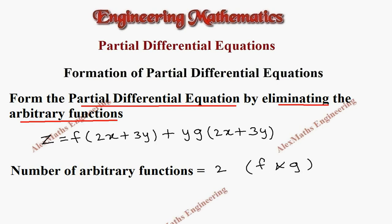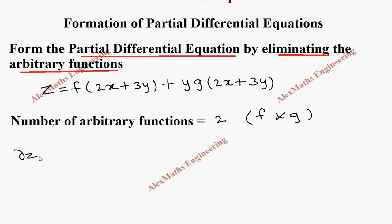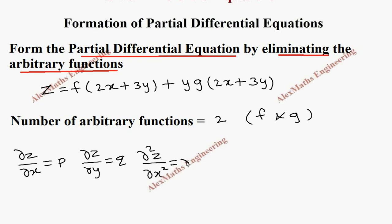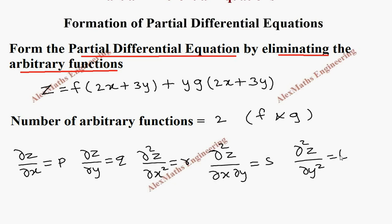To eliminate the arbitrary functions we are going to use: dou z by dou x, which is taken as p; dou z by dou y, which is taken as q; dou square z by dou x square, which is taken as r; dou square z by dou x dou y, which is taken as s; and dou square z by dou y square, which is taken as t.